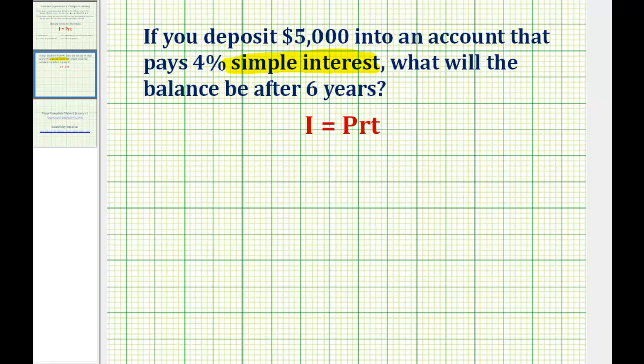To answer this question, we're going to use the simple interest formula, I equals P times R times T, where I is the interest earned, P is the principal or starting amount, which is $5,000 here, R is the simple interest rate expressed as a decimal, and T is the time in years.